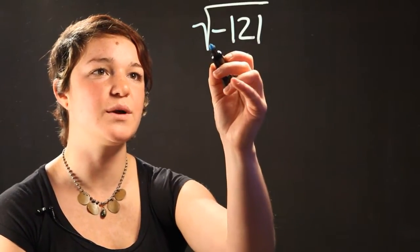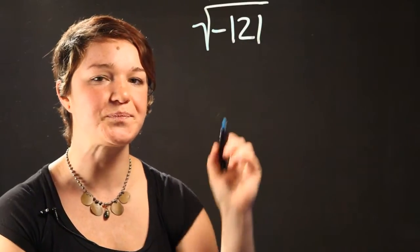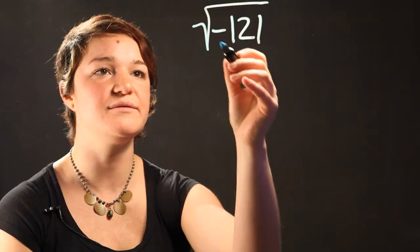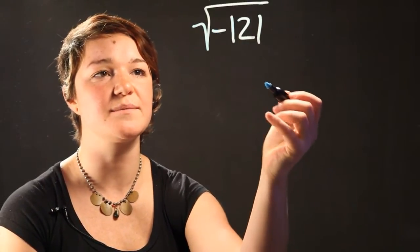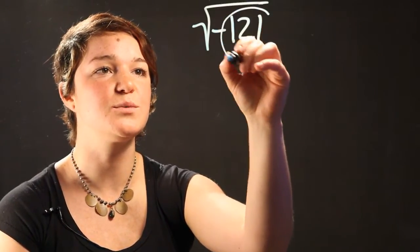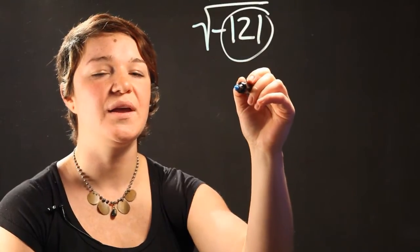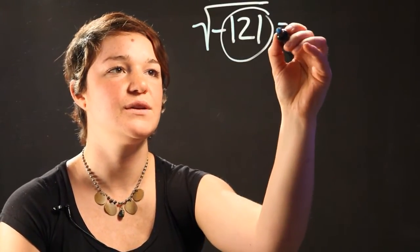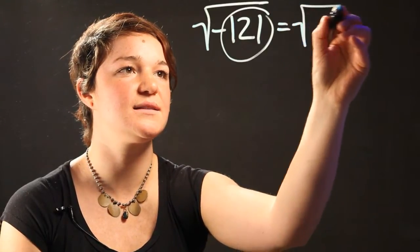So here we have a square root of a negative number. That means that the negative number is going to be left underneath the square root sign. But the rest of it, that 121, we can pull out. Now we know that 121 is 11 squared.